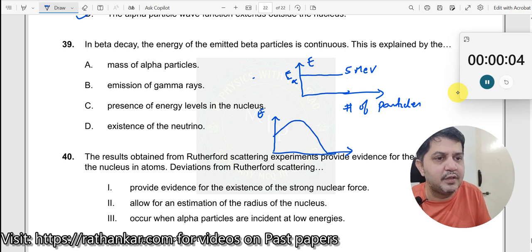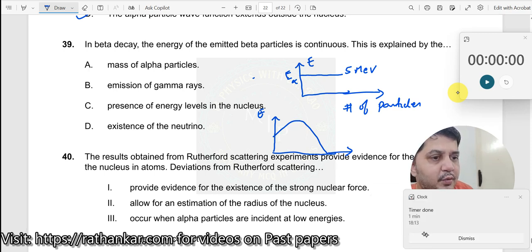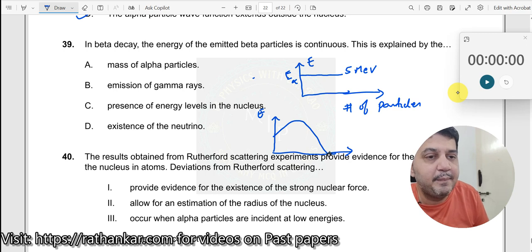So what does it mean? Sometimes the energy of the beta particle is lower, sometimes higher, sometimes zero. Why do you get a beta particle to be ejected with zero energy? This was asked by Wolfgang Pauli.